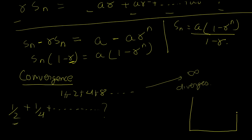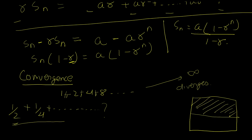We can visualize this: imagine a unit square representing area one. The first term one-half fills half the square. Adding one-fourth fills half of the remaining half. Each new term just divides the remaining area in half again — one-eighth, one-sixteenth, and so on. No matter how many times we repeat this, we can never exceed the square's total area of one, so the series converges to one.